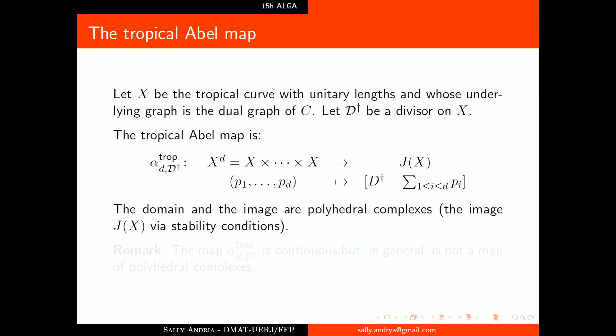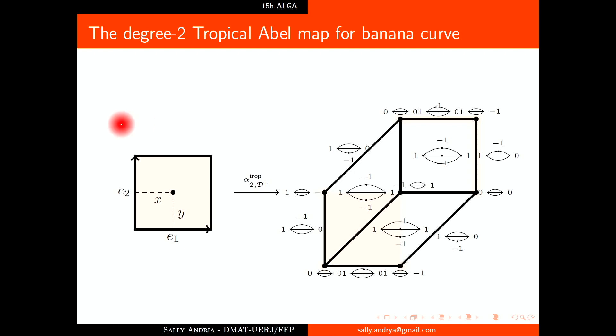Now we can see what is a tropical Abel map. Again we take d-tuples of points going to the class of divisor. What is important to hear is that the domain and the image are polyhedral complexes, but the map is continuous but in general is not a map of polyhedral complexes. What the hell is that? In our example we have degree 2, we have a square—there is a polyhedral complex. We can look at the image of the square. What happens? One cell is going into two cells, so it's not a map of polyhedral complexes. But if we could divide this square, make a subdivision here, we could have a map of polyhedral complexes—we could be two cells going into two cells.